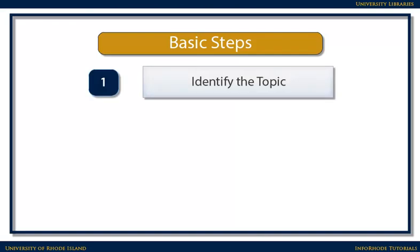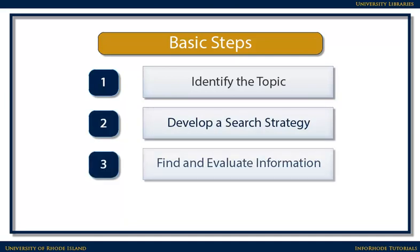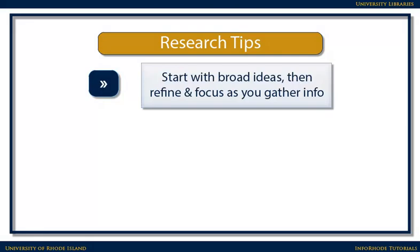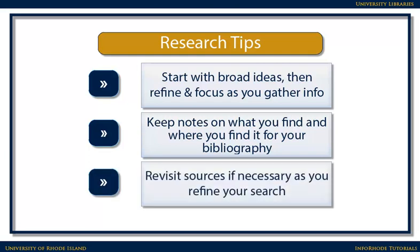The basic steps are to identify the topic, develop a search strategy, find and evaluate books, articles, and web resources on the topic, and use sources and cite them correctly. When you start research on a topic, you may begin with some broad ideas and then refine and focus the search as you gather information. As you work, keep a record of what you find and where you found it. You'll need it for your bibliography, but you may also need to revisit some of your sources as you refine your search.